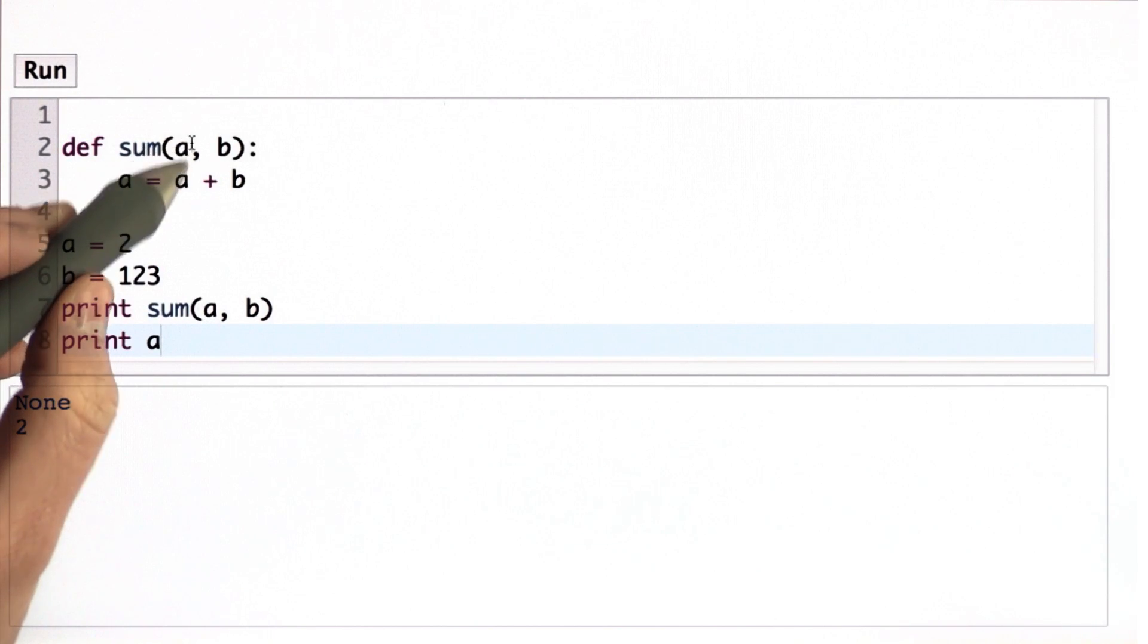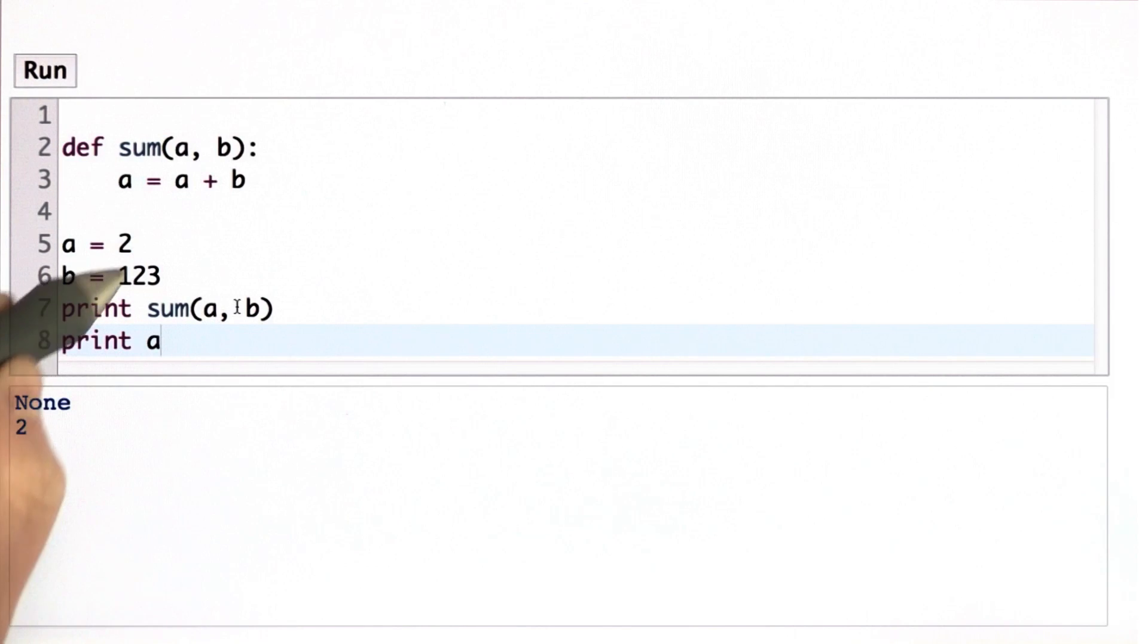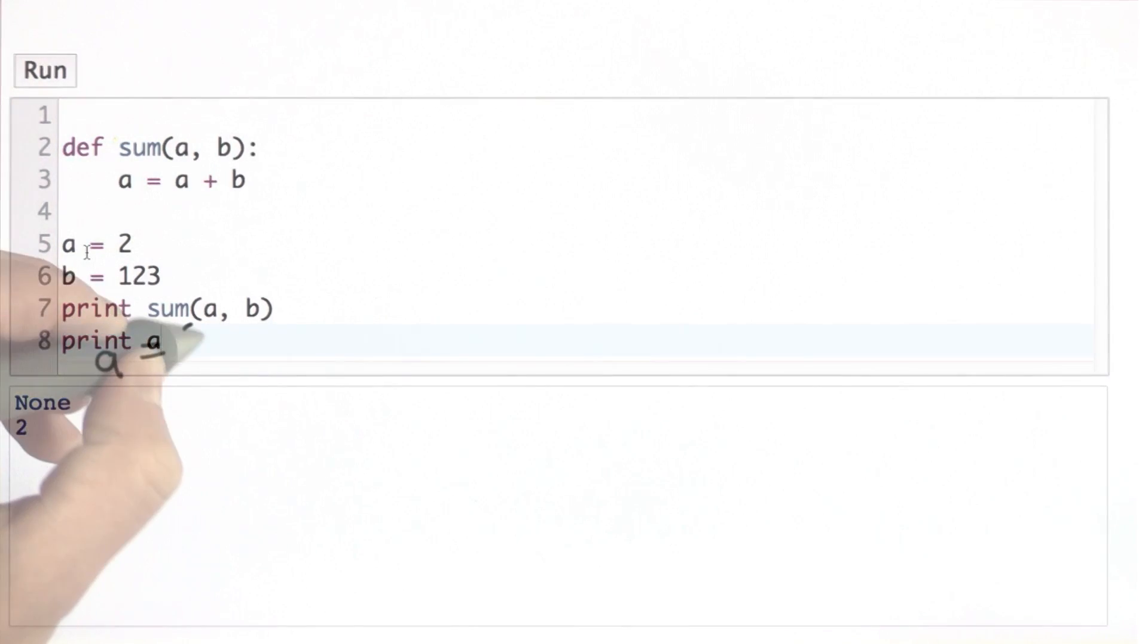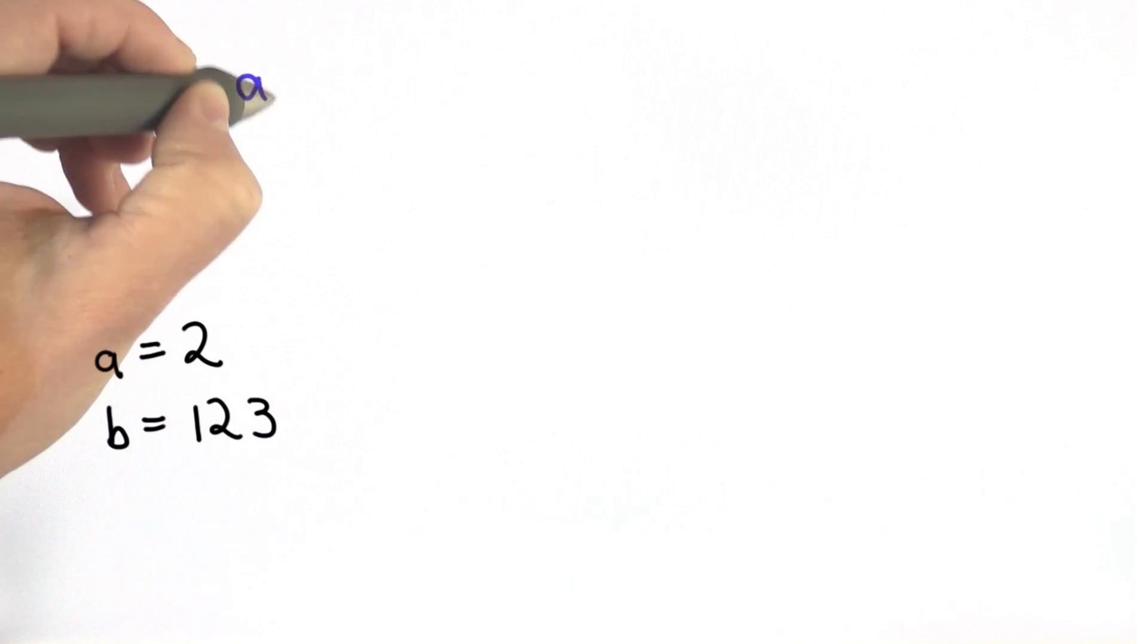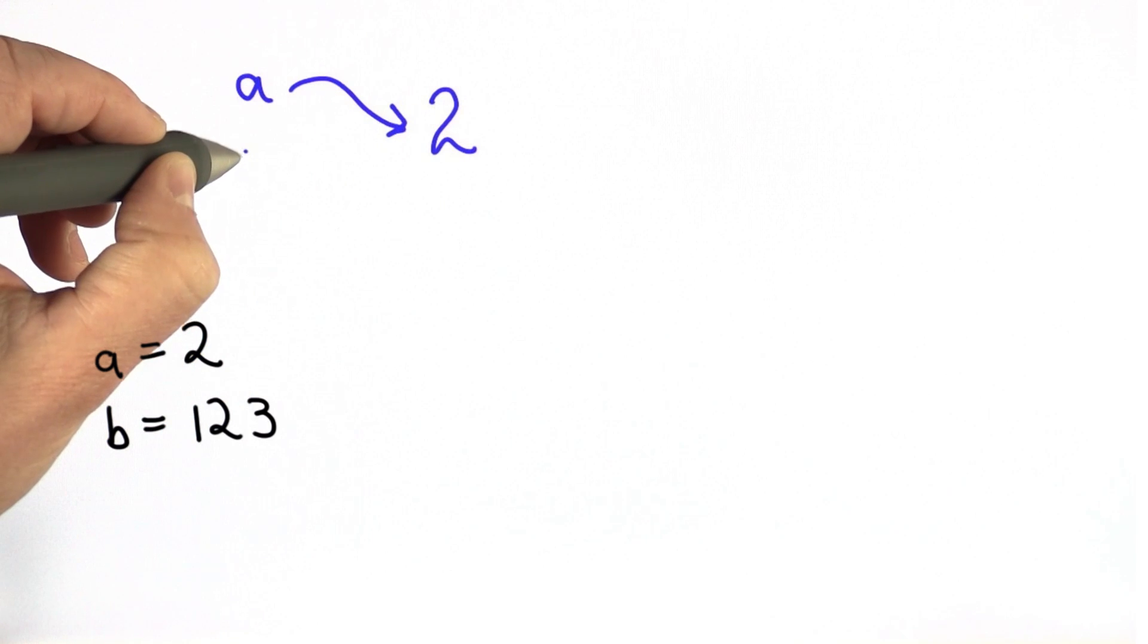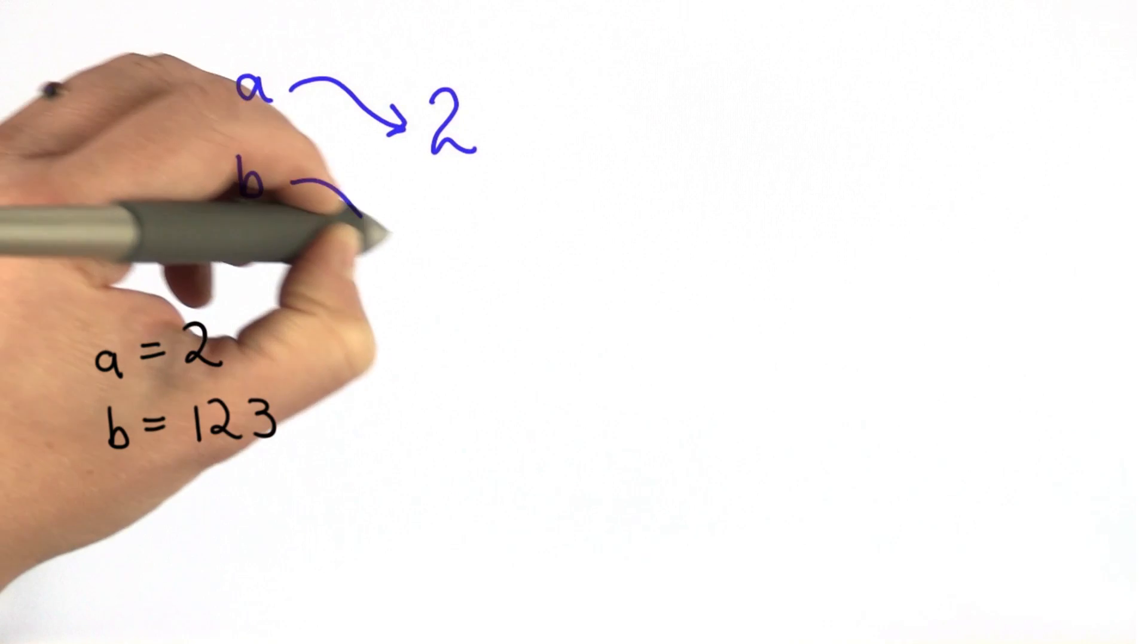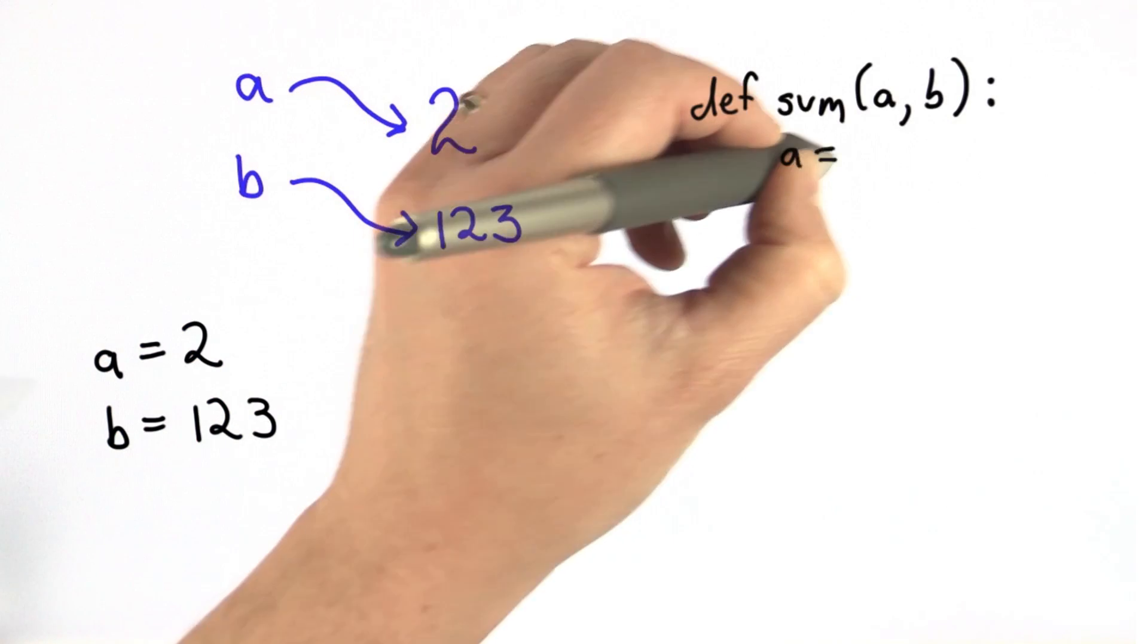When we call sum what's getting passed in as the value of a is the value that a refers to, which is the number 2. We don't actually modify what the variable is. That's a totally separate variable. So let me draw what that looks like to make it clear what's going on. So here we have our code. And so that introduced a name a. And it refers to the value 2. And it introduced a name b. And that refers to the value 123. Both of those are numbers.